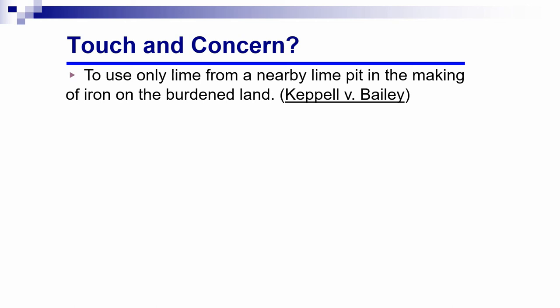Here are some classic issues about whether a covenant touches and concerns the land. The first is the old English case of Keppel v. Bailey, where the covenant said that an owner of an ironworks, which needed lime to operate, would only buy lime from a particular nearby lime pit. The question was whether a new owner of the ironworks would also be bound by that covenant. The court held they would not — a covenant to buy lime from a particular lime pit doesn't touch and concern the land. The burdened land wasn't affected in the slightest by where the lime came from.